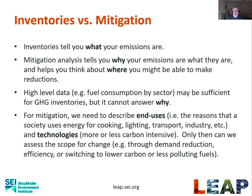While high-level data — for example, the fuel consumption in each sector — may be sufficient for conducting greenhouse gas inventories, it cannot answer why the fuel consumption is what it is. For mitigation, we need to make a more detailed analysis. We need to describe end uses — the reason that a society uses energy for various different purposes, like cooking, lighting, transport, and industry — and also look into the technologies, more or less carbon intensive, that might be available. Only then can we assess the scope for change.